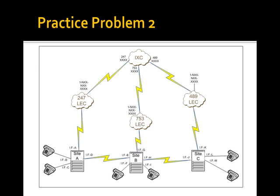We have a private network with three sites — Site A, Site B, and Site C. There are local phones at each site, trunk connections between those switches, and then trunk connections out to the PSTN.